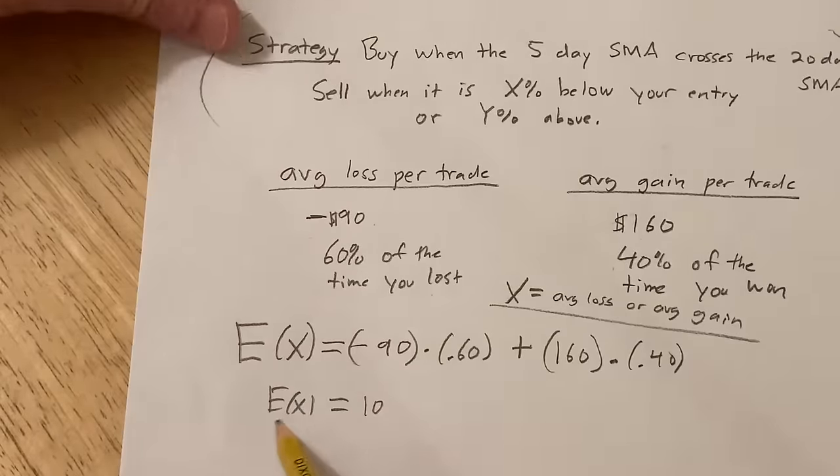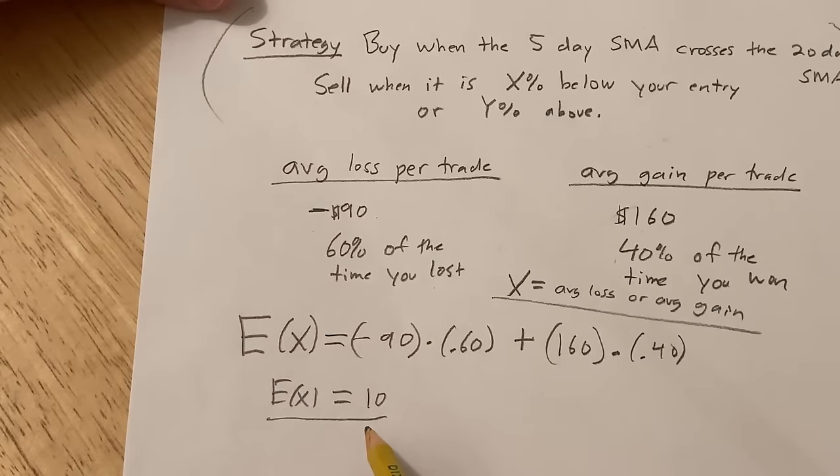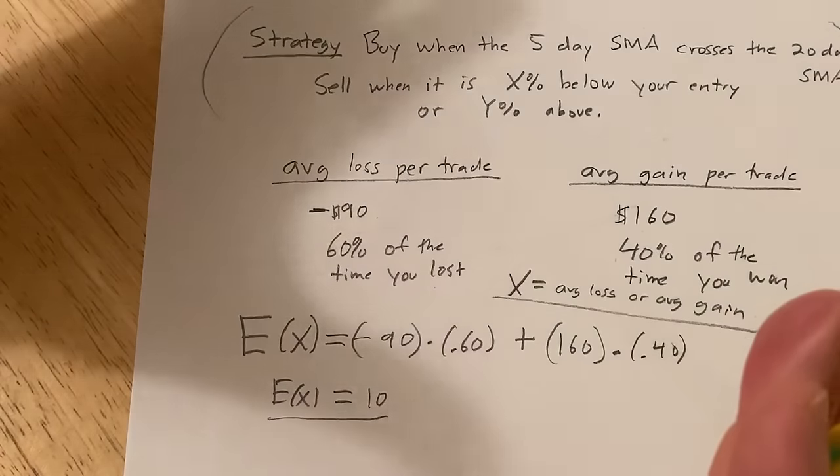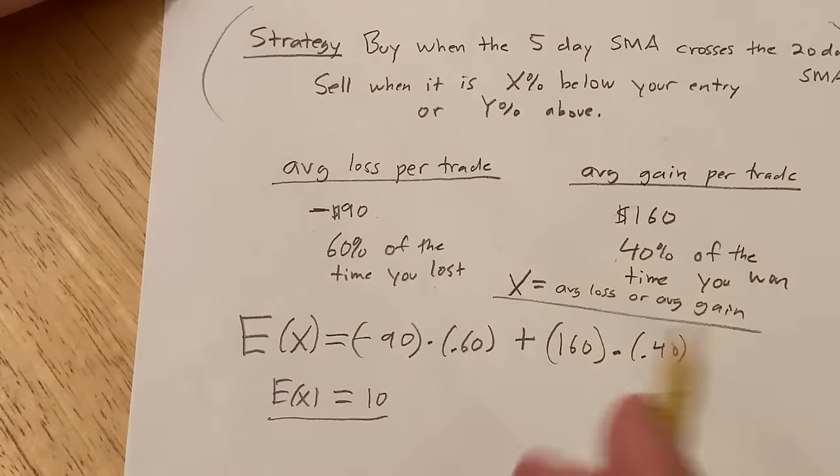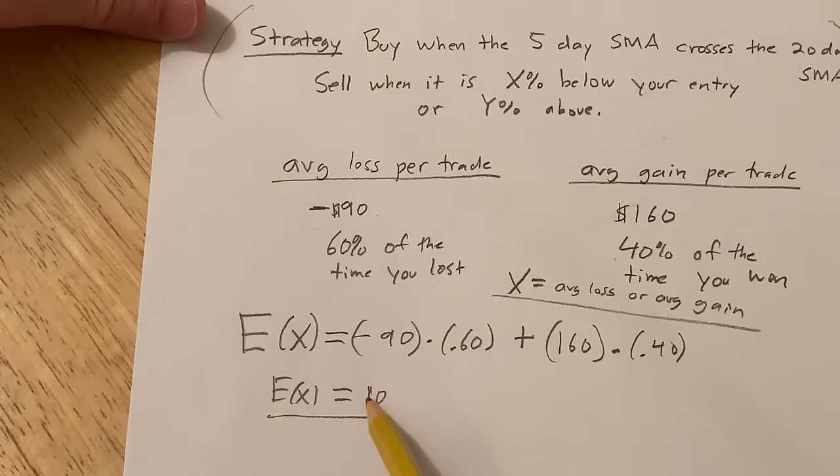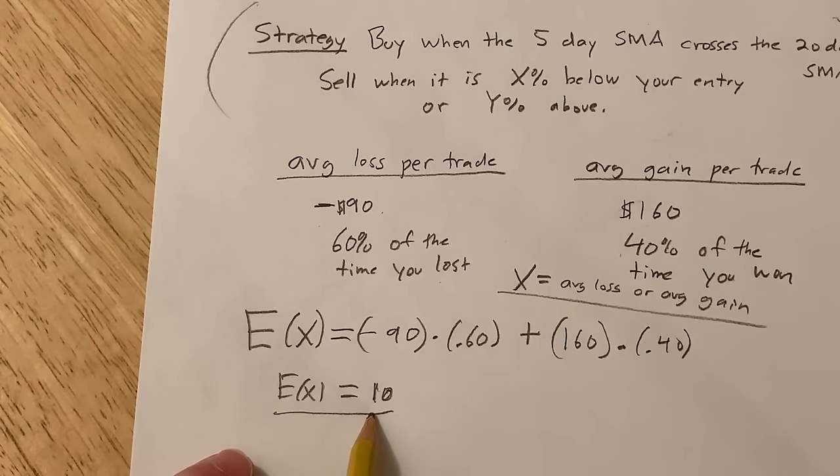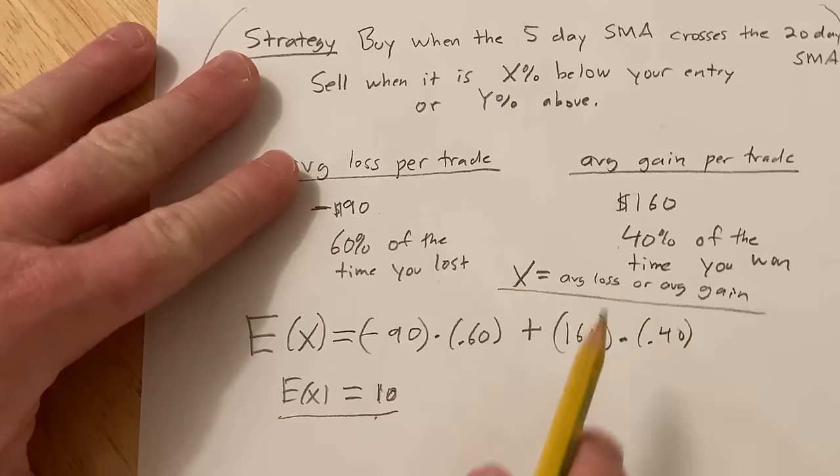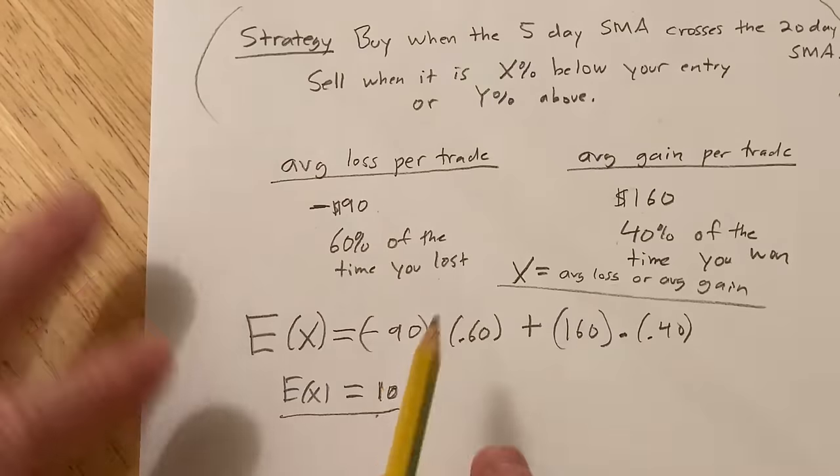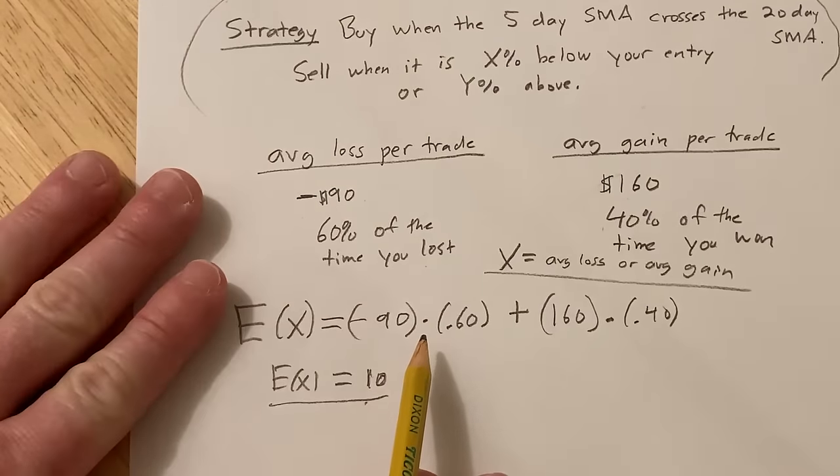So what does this mean? This means that in the long run, your average loss or gain per trade is going to approach 10. Because this is a number that we computed using a calculator and a pencil and a piece of paper.